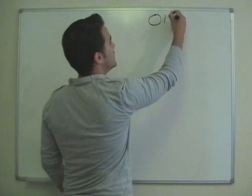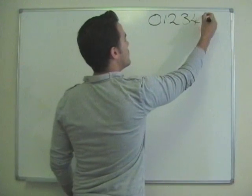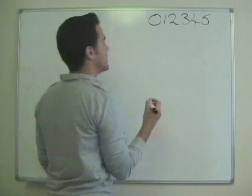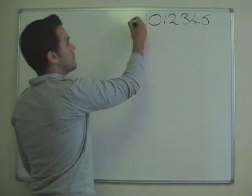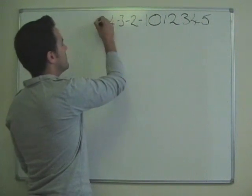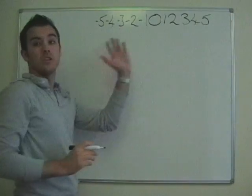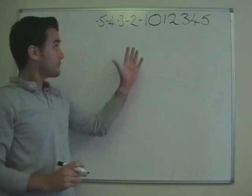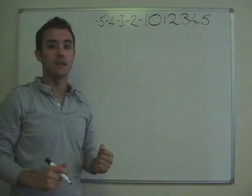So one, two, three, four, five in that direction. Now obviously we've got our negative numbers, minus one, minus two, minus three, minus four, minus five. Now you can make the number line as long in either direction as you want. Now why does this help when we're adding and taking away?